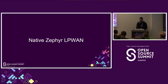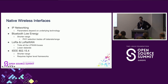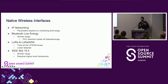So, native Zephyr LPWAN — what are your options? Based on my experience, you've essentially got four choices for native wireless inside Zephyr. The first is IP networking; there have been a couple of talks today about that. The exact parameters and trade-offs are specific to what sort of IP networking you're using. In Zephyr this typically means an LTE link or a Wi-Fi link.